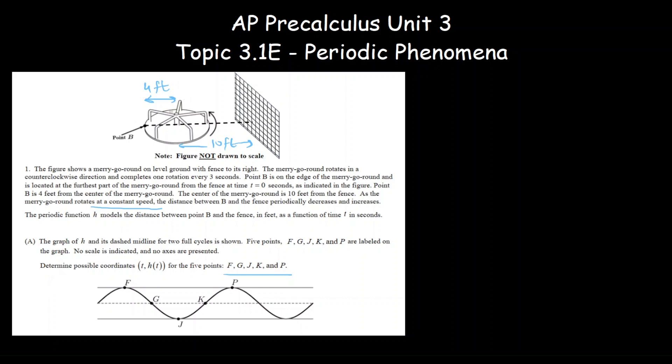At time t equals zero, it is at the maximum distance, and the maximum distance will be ten plus four, because ten is here and four is this much. So it will be fourteen. F is clearly zero comma fourteen.